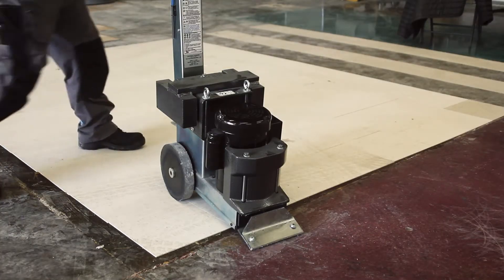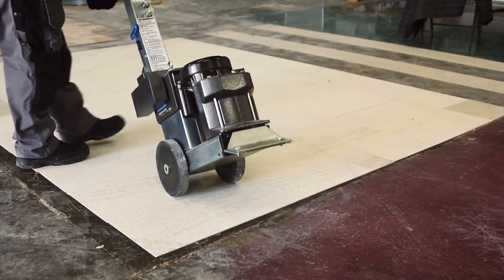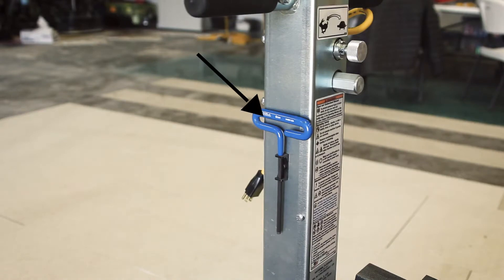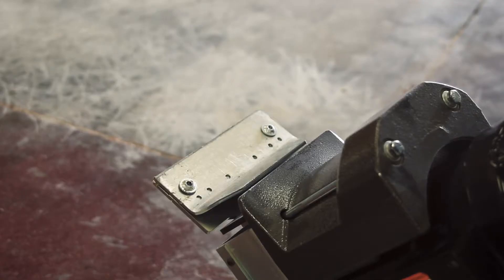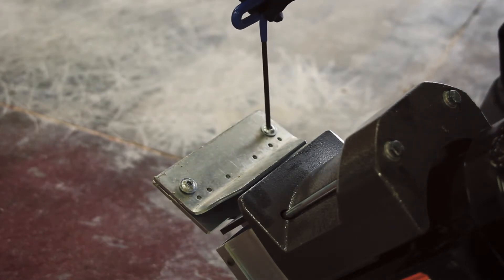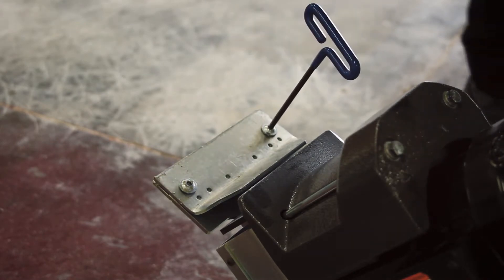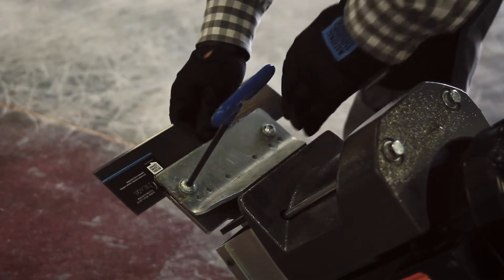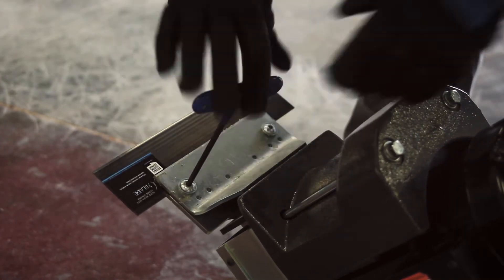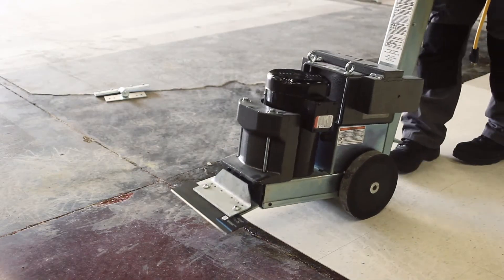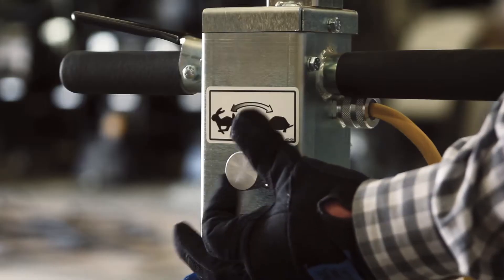To insert or swap out a blade, the first step is to tip the machine backwards. Using the t-handle allen key, loosen the bolt on the front of the machine as shown. Insert the appropriate blade for your job and tighten the bolts once again using the t-handle allen key.